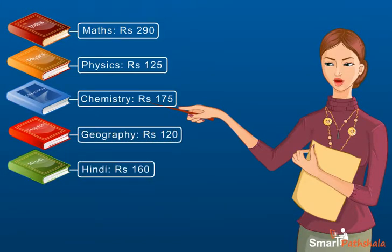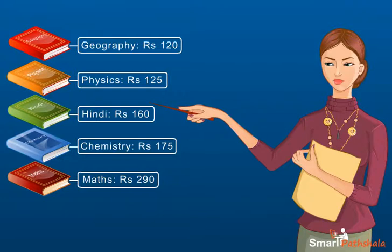We need to arrange them in ascending order. Since the cost of geography book is least, it will come first. Next will be Physics, followed by Hindi, Chemistry and Maths.